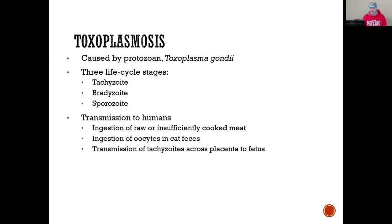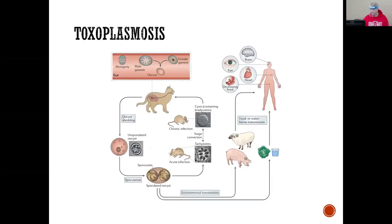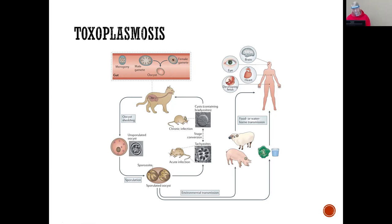The tachyzoites cross the placenta to the fetus, and the fetus becomes infected — that's not good. Here's the life cycle: the human can be infected by eating undercooked pork, or by ingesting food or water that has been fecally contaminated. The parasite can be harbored in pigs or sheep, and it affects the brain, eyes, heart, and the developing fetus.